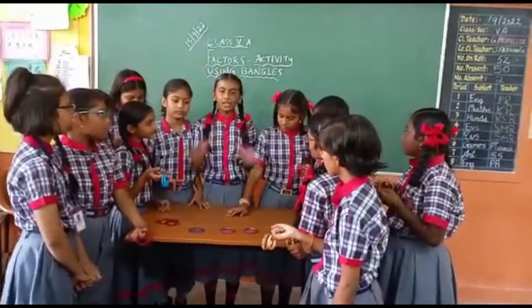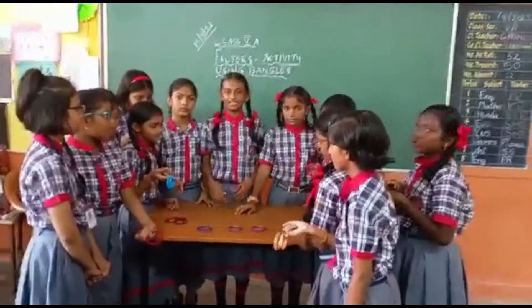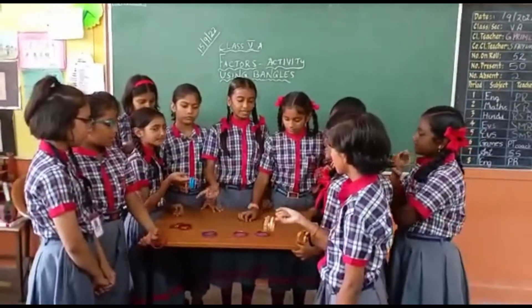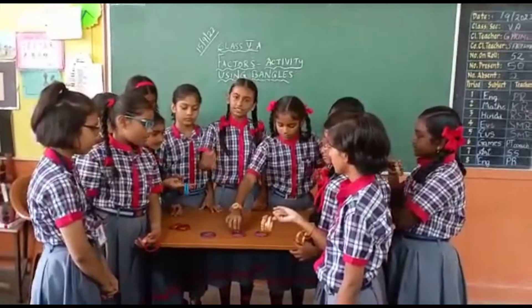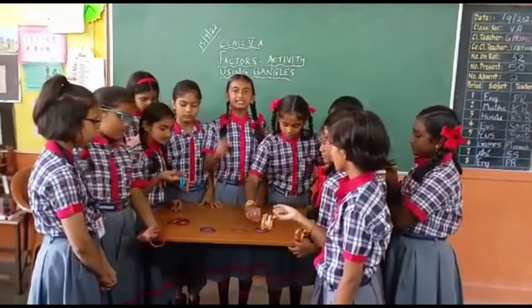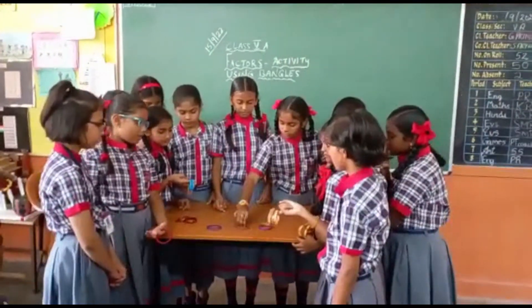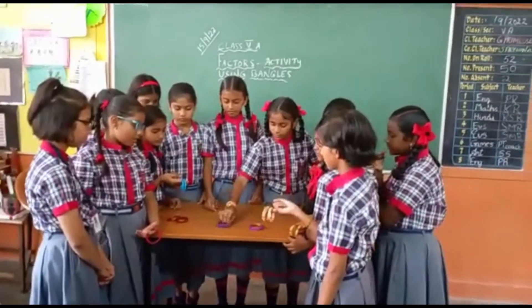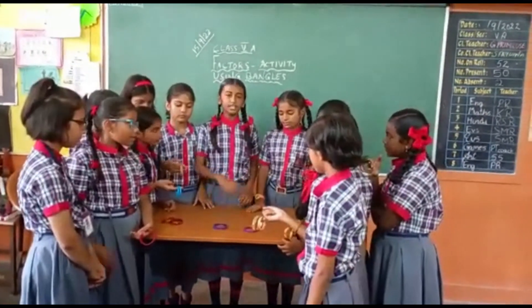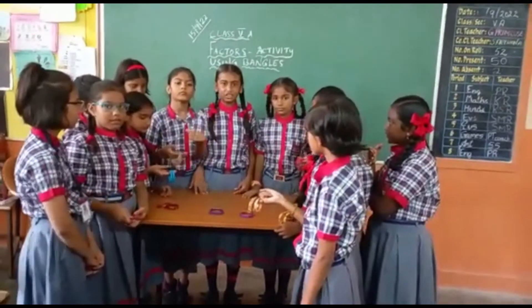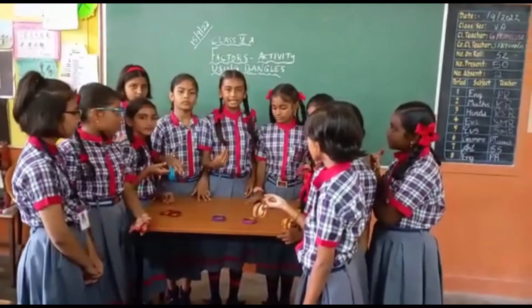Next, 5 will not be a factor. So, 6 will be the factor. She is going to arrange 6 in one group. There are two groups and each group has 6 bangles.